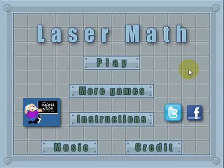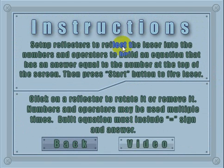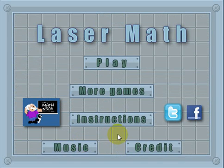Okay, when you first start the game, this is the menu you'll see. You can click More Games, it'll take you to the MathNook website. Instructions will show you the instructions. You can either read them or watch this video by clicking this button here. Let's go ahead and click back and get back to the menu. The Music button will turn the music on and off.